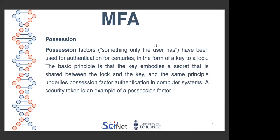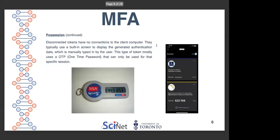Possession factors — something only the user has — have been used for authentication for centuries, in the form of a key to a lock. The basic principle is that the key embodies a secret shared between the lock and the key. The same principle underlies possession factor authentication in computer security. A security token is an example of a possession factor. Disconnected tokens have no connection to the client computer; they typically use a built-in screen to display generated authentication data, which is manually typed in by the user. This type of token mostly uses a one-time password, OTP, that can only be used for that specific session.